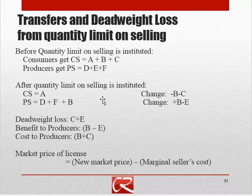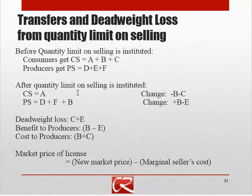In terms of the effects on consumer and producer welfare, it's very similar to price controls. Transactions that would have been mutually beneficial trades no longer happen, so the gains from trade — C and E — no longer happen. That's our deadweight loss. B is the area redistributed from consumers, because B used to be part of consumer surplus and now it's below the price and above the supply curve, so now B is part of producer surplus. Overall, the same redistribution, but we don't create the problem of surpluses like we did with a price floor.